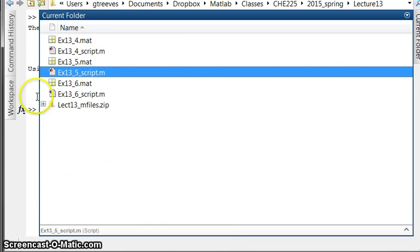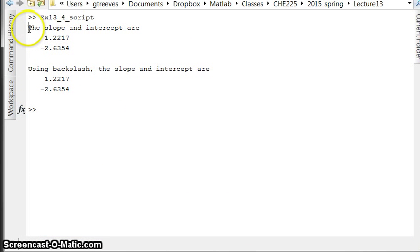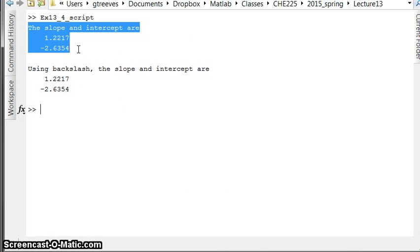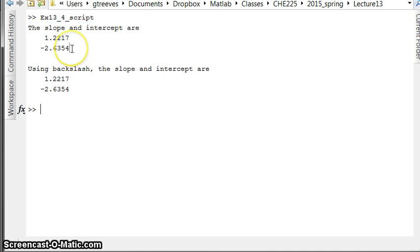So using the slope and intercept by calculating by hand the pseudo-inverse, you get this and then using the backslash you get the exact same answer. And note that these are the same answers for the slope and intercept that we found in our in-class example with the Excel file from the previous lecture.